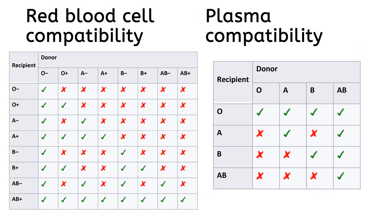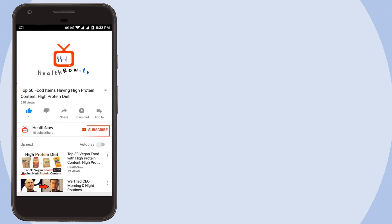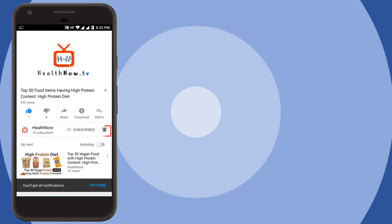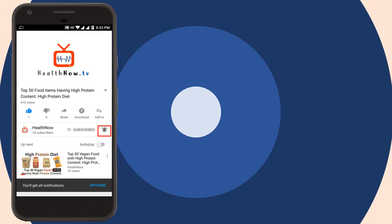These tables show a summary of red blood cell compatibility and plasma compatibility. Complications of blood group incompatibility could be acute hemolytic reactions or hemolytic disease of the newborn. So it is very important to do blood grouping and cross-matching before doing blood transfusions. Thank you for watching this video — make sure you subscribe to Health Now TV and press the bell icon to stay up to date with all the latest updates from this channel.